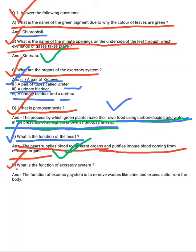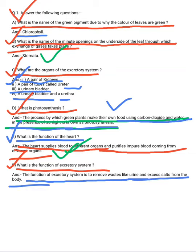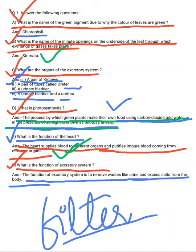What is the function of the excretory system? The function of the excretory system is to remove waste like urine and excess salt from our body.